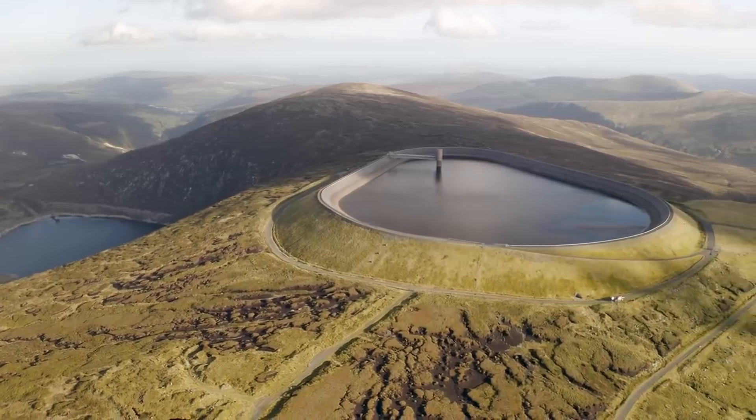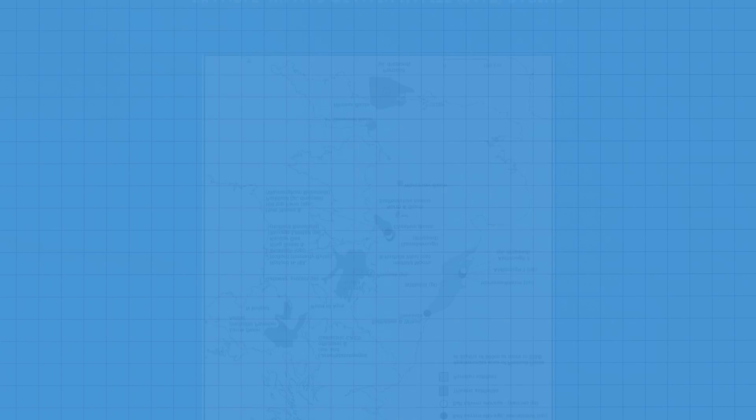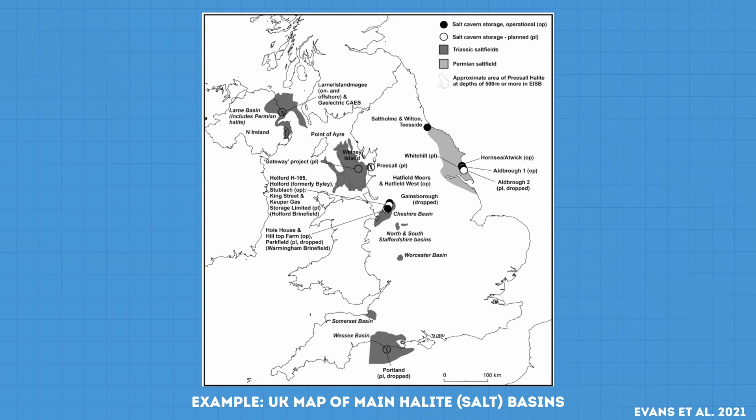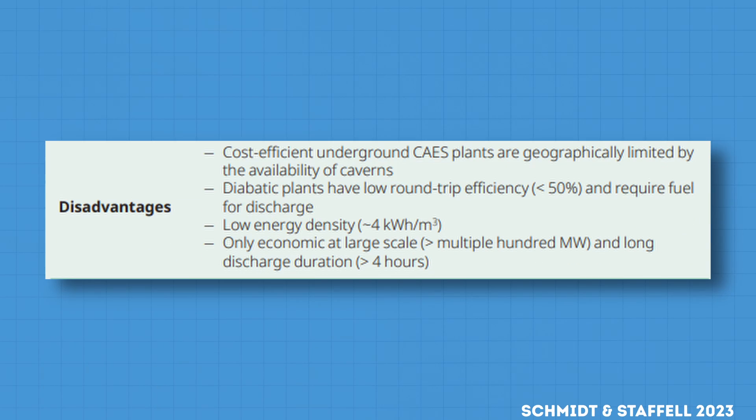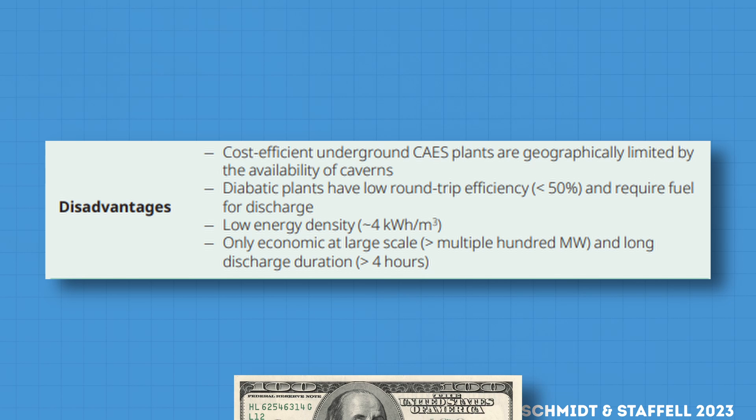Compressed air energy storage is normally only economical at large scale and longer discharge durations, which is why it's quite similar to pumped hydro storage. As for the cons: firstly, it's quite location dependent, requiring good geological formations such as salt caverns. However, if air is stored above ground in tanks, this is not an issue — the underground option may be cheaper but is constrained to a few locations, whilst tanks are more expensive but can be modularized and placed anywhere. Due to CAES having a low energy density, the size of projects can make financing a challenge.